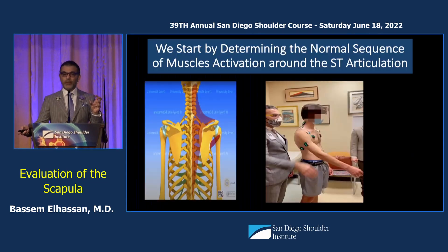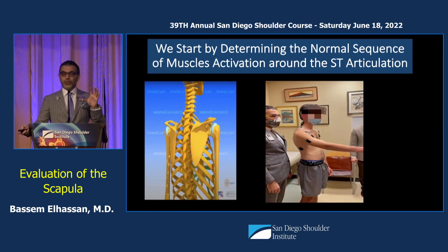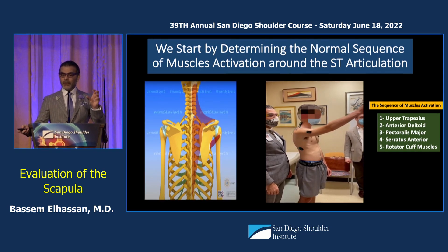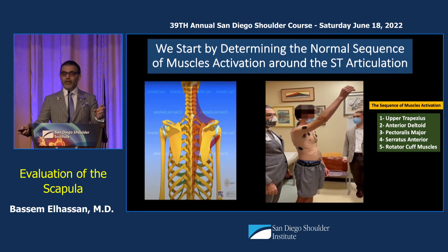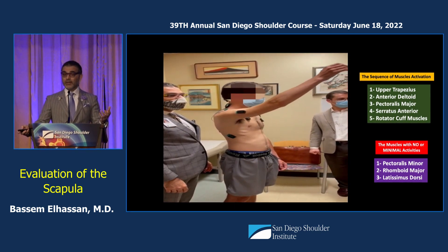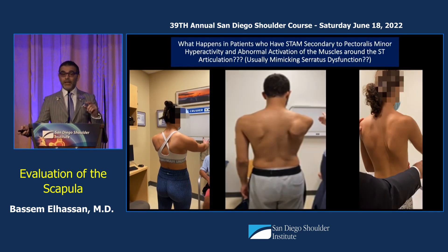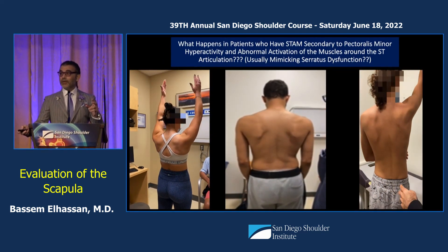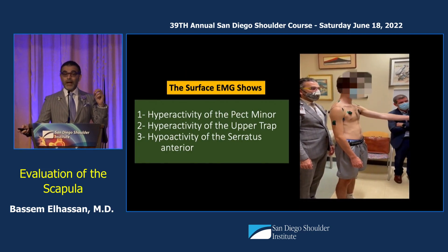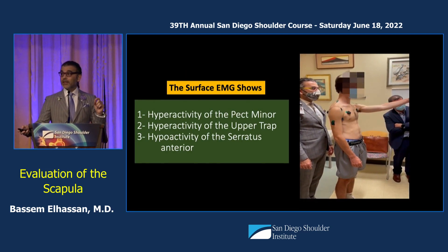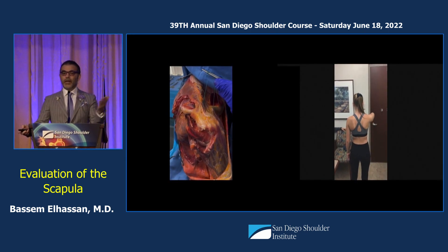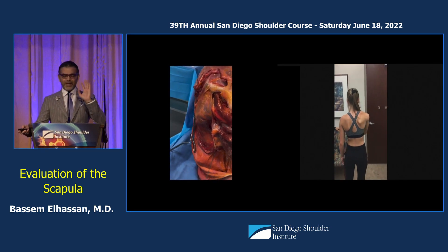When muscles are abnormal but there is no paralysis, we use surface EMG to figure it out. During attempted shoulder motion, the trapezius, deltoid, pectoralis, and serratus normally activate, while the muscles that don't activate are pect minor, rhomboid major, and latissimus. But if you have an abnormality, the pectoralis minor becomes hyperactive, upper trapezius becomes hyperactive, and the serratus becomes hypoactive. When you see this patient, everyone will say it's medial winging — very confusing.